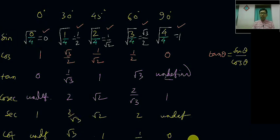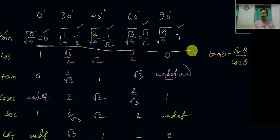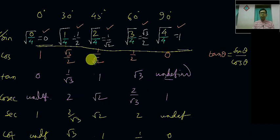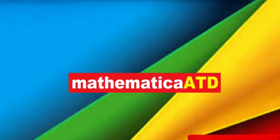This is a very easy trick — you just have to remember the first line, which is for sin. If you can remember the first line, then you can find out all the other trigonometric ratios for the corresponding standard angles. Thank you, have a nice day.